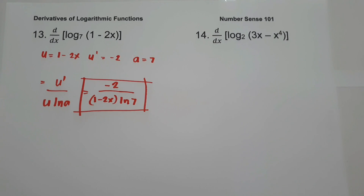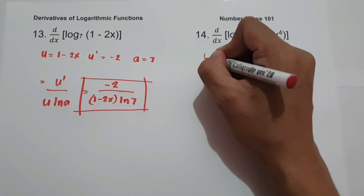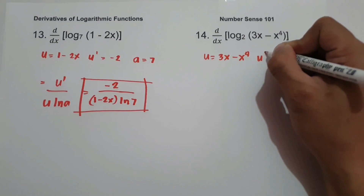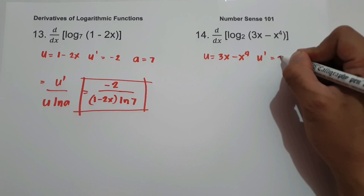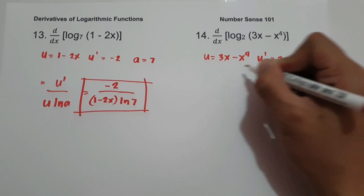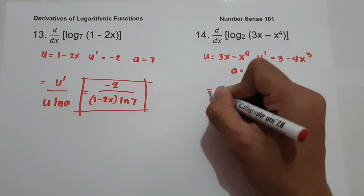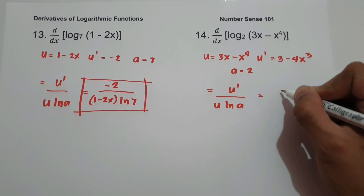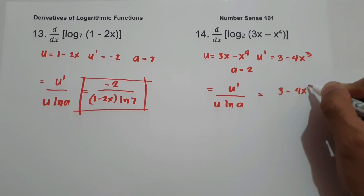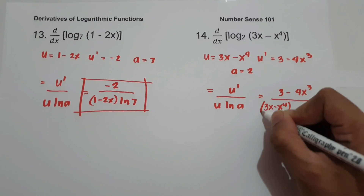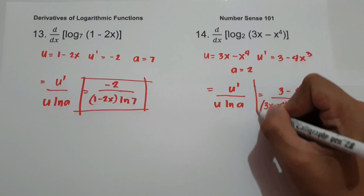Number fourteen: derivative of log base 2 of (3x − x⁴). Let u = 3x − x⁴, so u' = 3 − 4x³, and a = 2. Applying the formula u' over (u · ln a) gives (3 − 4x³) over ((3x − x⁴) · ln 2). This will be our answer.